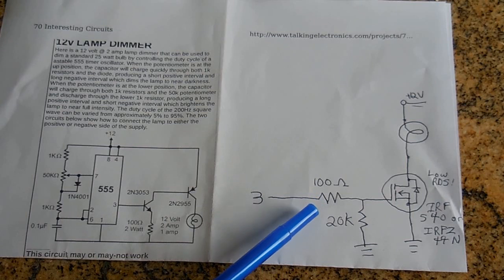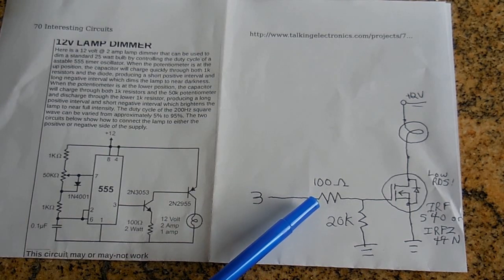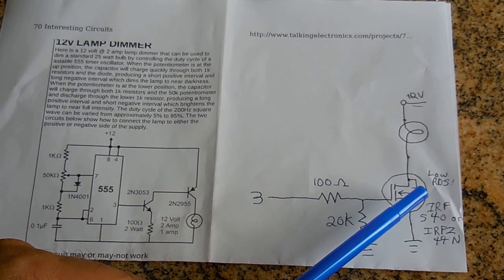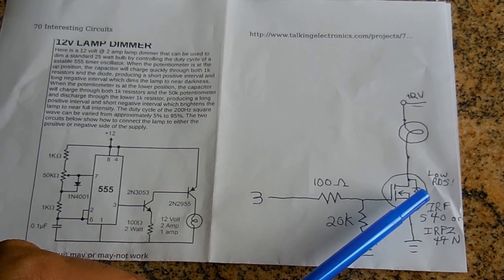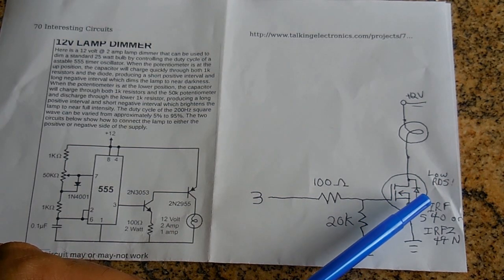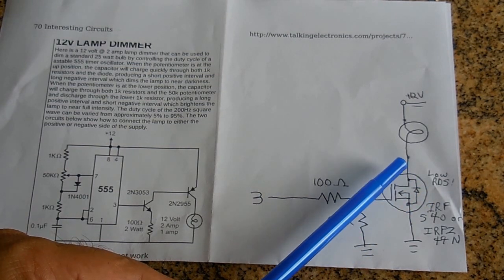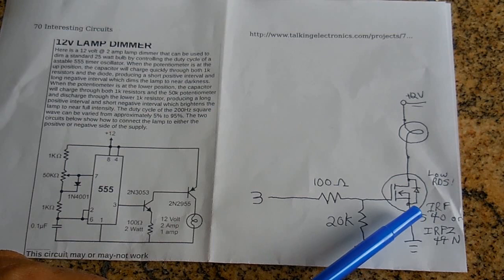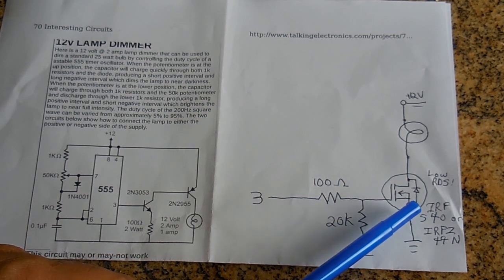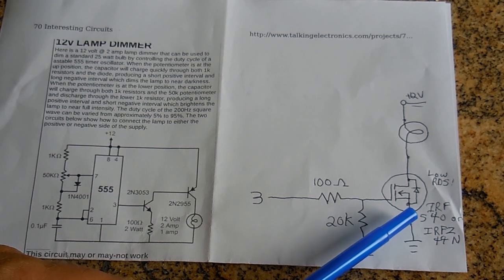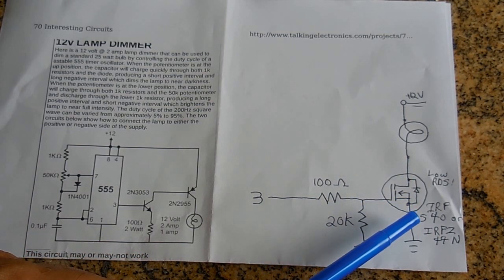So from pin 3 you go into a 100 ohm resistor that goes to the gate of the MOSFET. You want to make sure you use a low RDS. And what that refers to is the level of resistance when the MOSFET is turned on between the drain and the source. You want that as low as possible. You get the maximum amount of current, the lowest voltage drop across the drain and the source. And you also have a lot less heating.